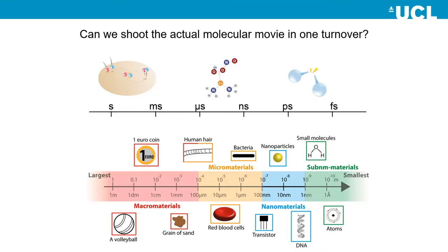The question is: can we shoot actual molecular movies for a complete turnover? That means we need very fast beams. Molecules are also very small — in the nanometer size, and atoms are below one nanometer — so we also need a beam with wavelengths similar to atomic dimensions. That's why we think we need very fast X-rays to capture the process.